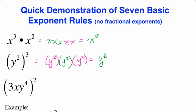The third example involves the product to a power rule. In this case, we have this entire quantity and it's being squared. Please don't use the distributive property — the distributive property does not apply here. You cannot distribute an exponent. The exponent is applied to all parts of the product. We have 3xy to the fourth, so we're going to have 3xy to the fourth times itself.